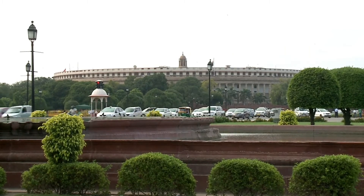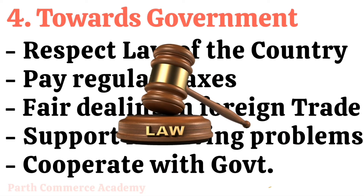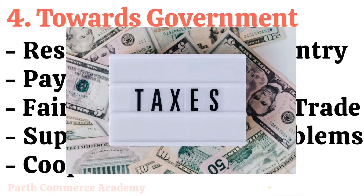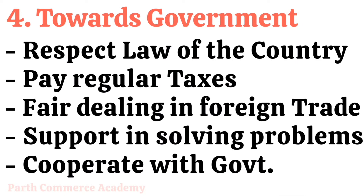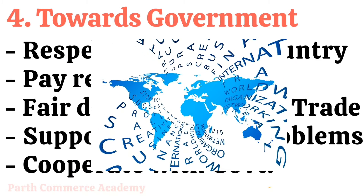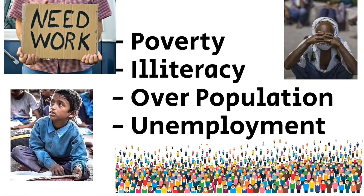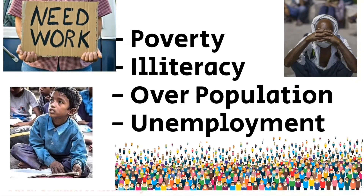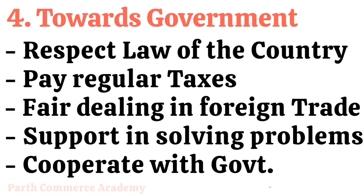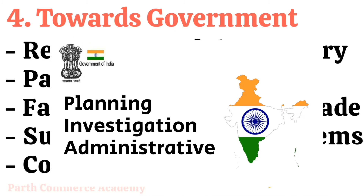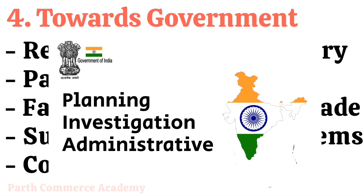Next is social responsibility of business towards government. First is to respect the law of the country, then to pay taxes regularly and honestly. Adopt fair dealings in foreign trade so that the country's reputation is maintained. Next is to support the government in solving various national problems like poverty, illiteracy, overpopulation, and unemployment. And the last is to cooperate in the planning, investigation, and administrative activities of the government.